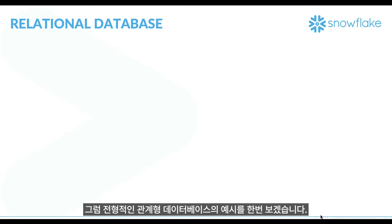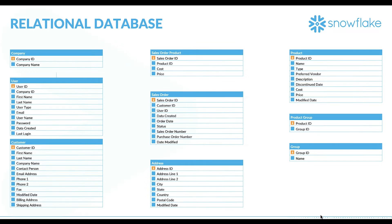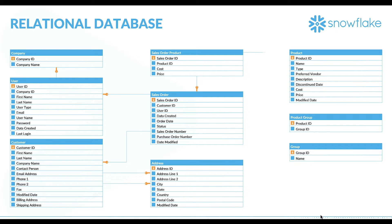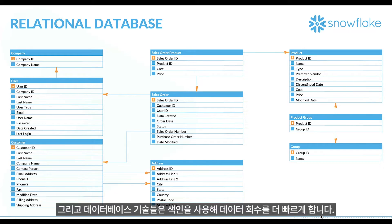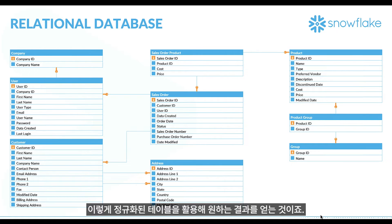Let's look at a typical relational database model. Tables like sales, customer, company, address, and product are interlinked with the help of relationship constraints, and database technologies use indexes to retrieve data faster by joining all these normalized tables.